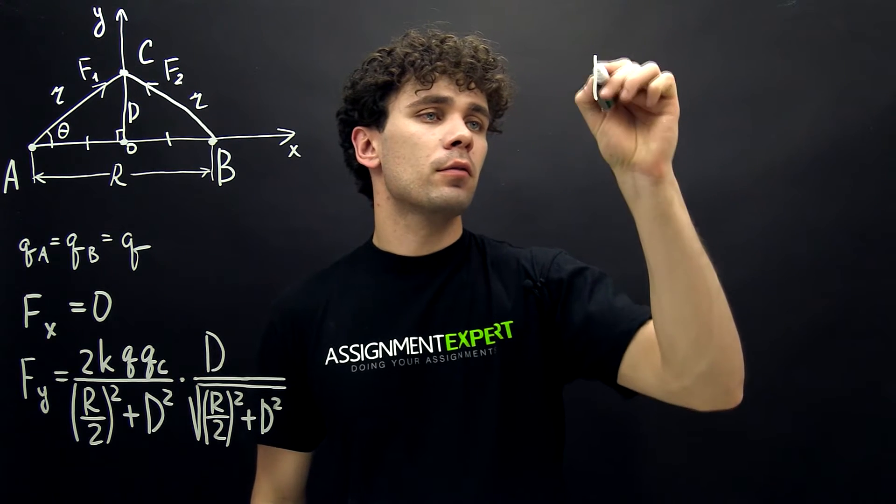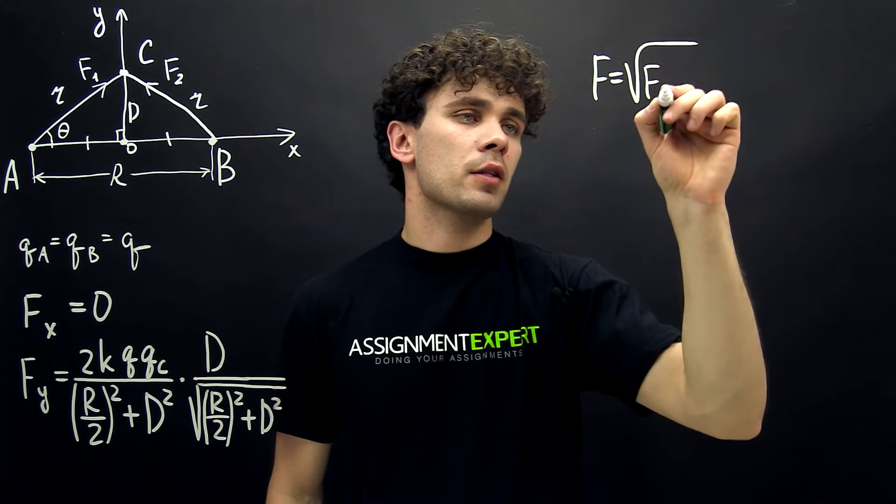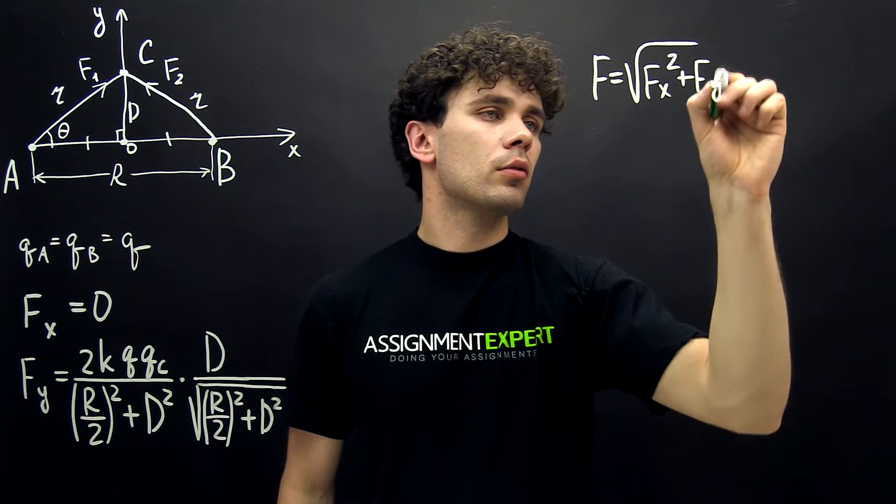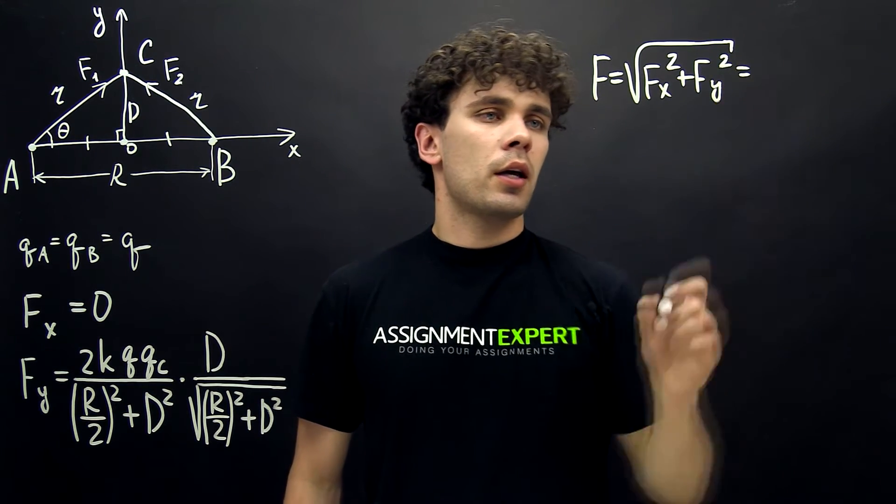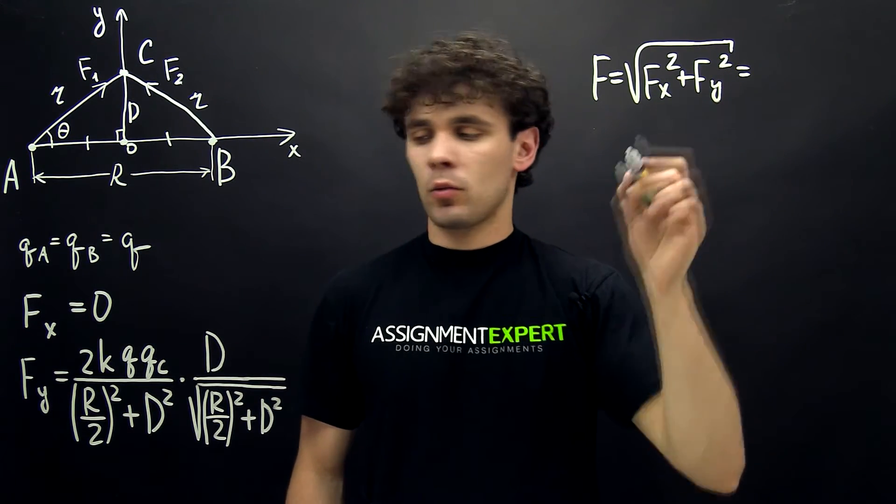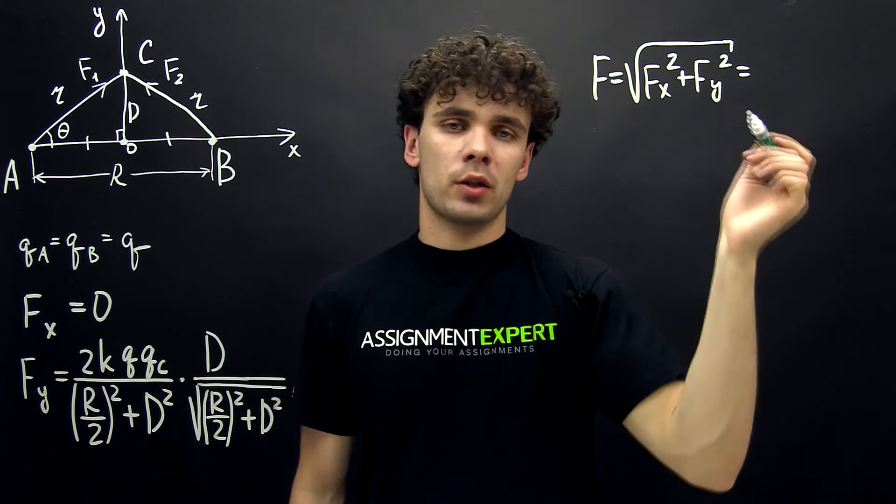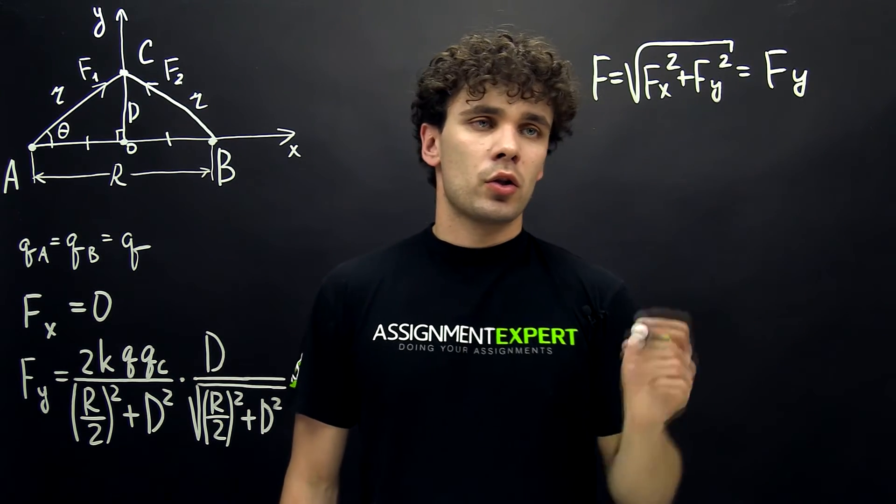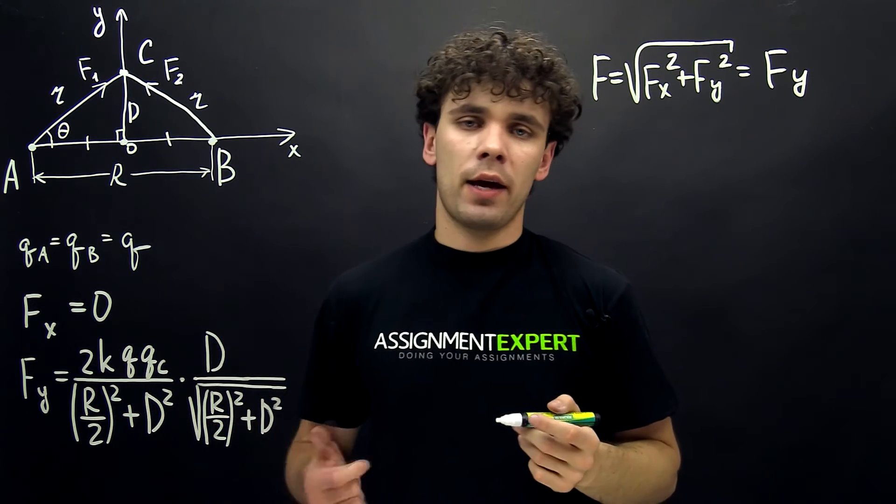Therefore, F equals the square root of Fx squared plus Fy squared. And here we have Fx squared, and Fx is zero, so we're left with the square root of Fy squared. And this gives us just Fy. So the net electrostatic force is equal to this expression Fy.